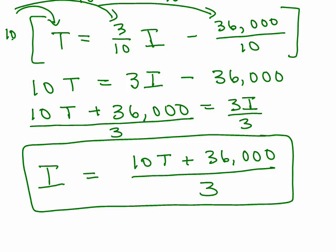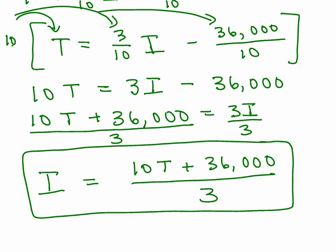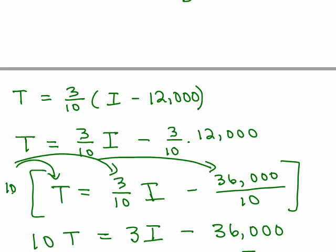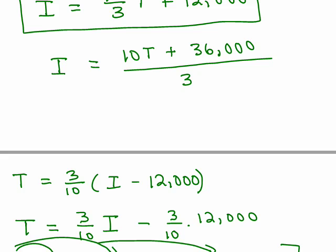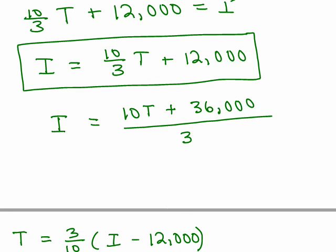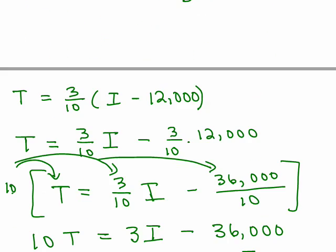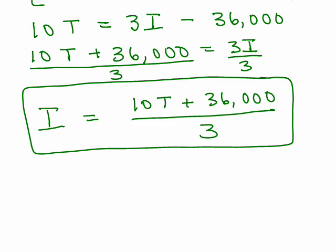So that's a different approach to solving the same problem. And let's just go back up, 10T plus 36,000 over 3. Remember that was another way I could have written it before. Remember I had 10 thirds T plus 12,000 and by putting it over a common denominator, I also got 10T plus 36,000 over 3.